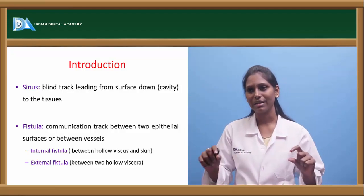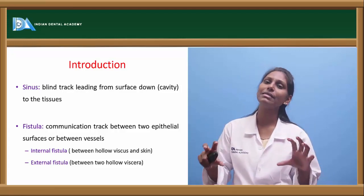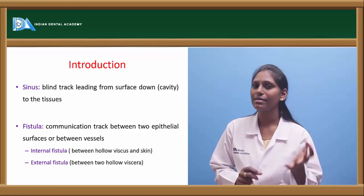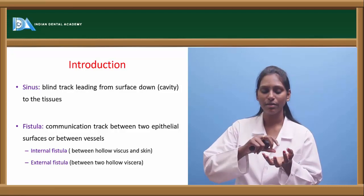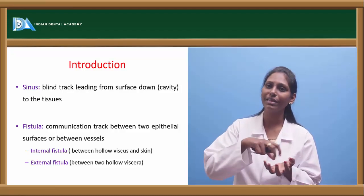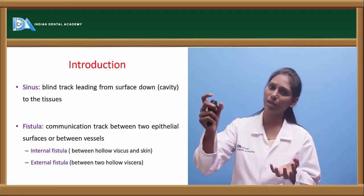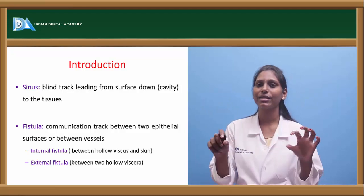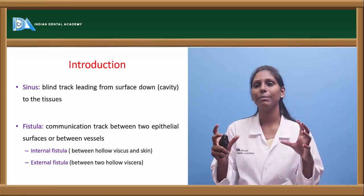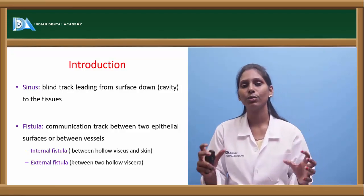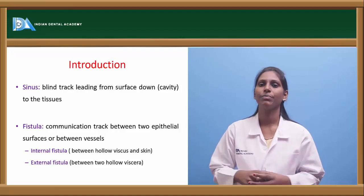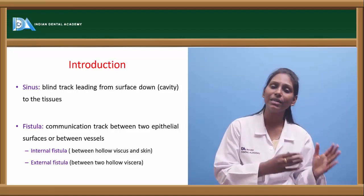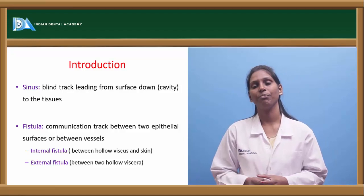A fistula is nothing but a connection or track between two epithelial surfaces or between vessels. So a sinus is a connection from a cavity to the overlying tissue, whereas a fistula is a connection or track between two epithelial surfaces or between two vessels. Fistula is again divided into internal fistula and external fistula.